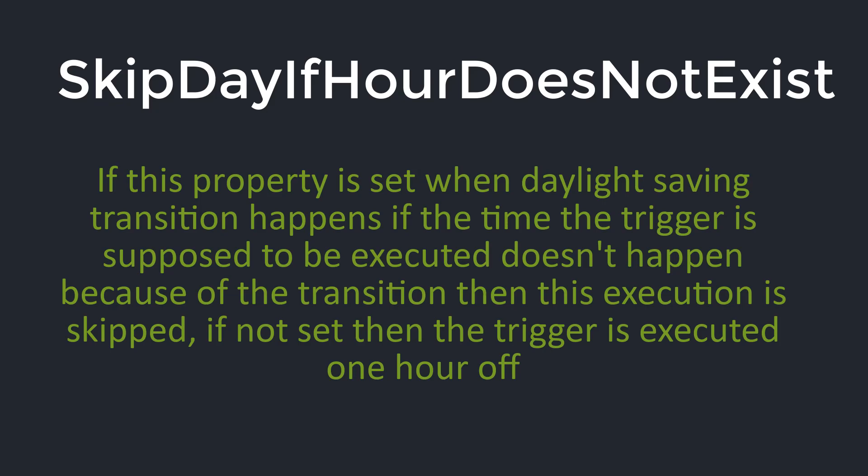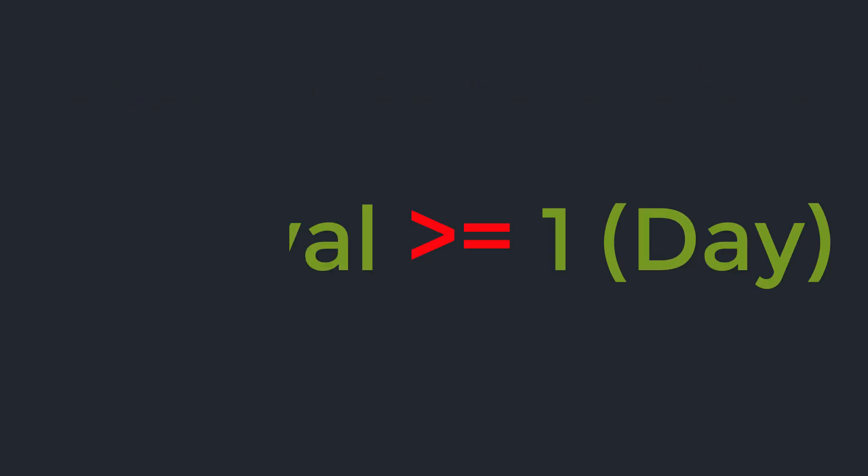You should be using calendar interval schedule if you are scheduling jobs across weeks, months or years. The preserve hour of day across daylight savings and skip day if hour does not exist properties apply only if the interval is 1 day or greater.